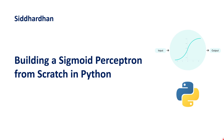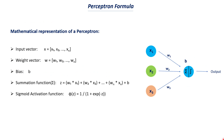Hello everyone, I am Siddharthan. Currently we are in the first module of our deep learning course, and in this first module we are discussing the basics of deep learning. The previous videos of this module were about what is meant by a perceptron and its mathematical aspects. In this video, let's try to build a sigmoid perceptron from scratch in Python based on the understanding we have so far. This will be the agenda for today's video — let's get started.